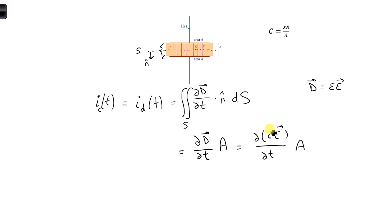And so then we have ε dE/dt times A. And the ε, the material permittivity, doesn't change anywhere in the capacitor, and it also doesn't change over time. So we can pull this out, so we have then ε A dE/dt.